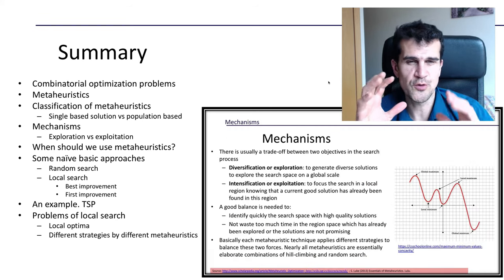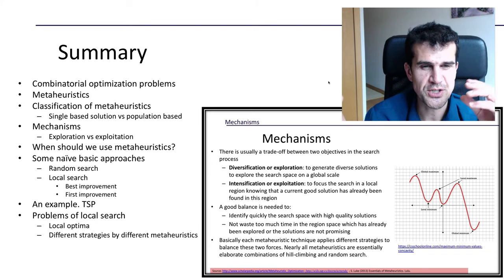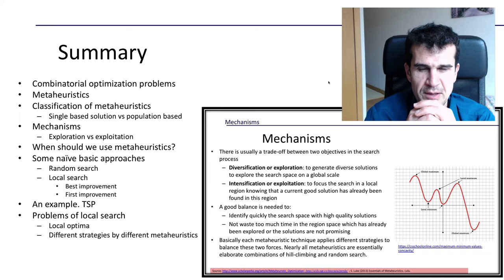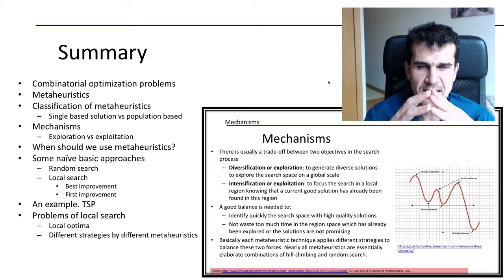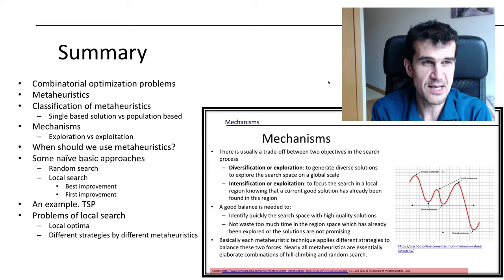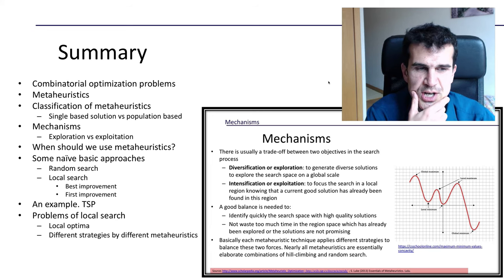These are actually two really important strategies we have to find an optimum in any problem: exploration and exploitation. To find a good solution we have to keep a good balance between exploring a wide range of the search space so we don't miss any good areas, but once we have found an area that looks promising we should intensify our efforts in that area. It's always good to find a good balance between these two conflicting strategies, and nearly all metaheuristics can be seen as an elaborate combination of exploration and exploitation.